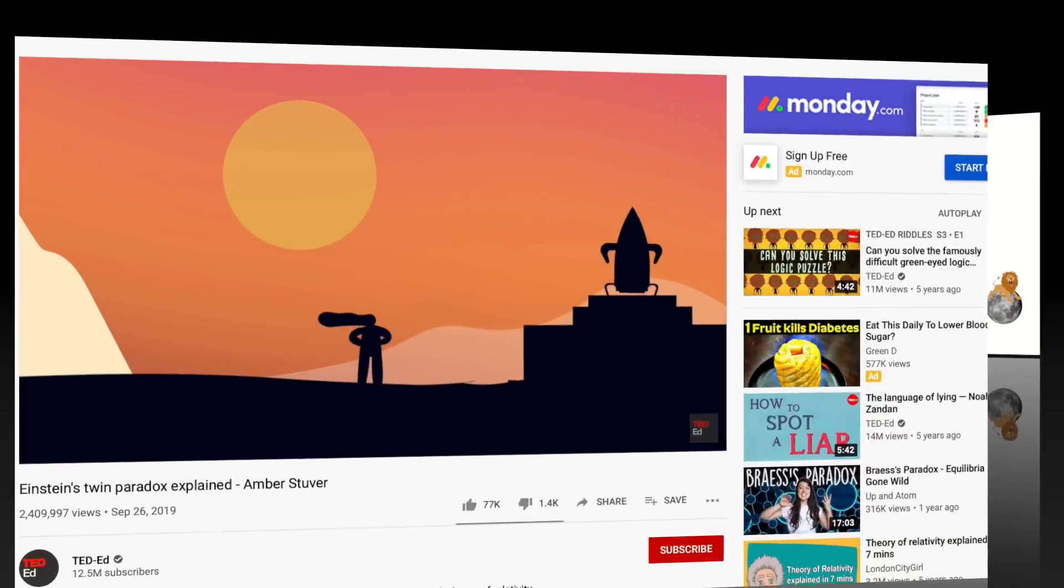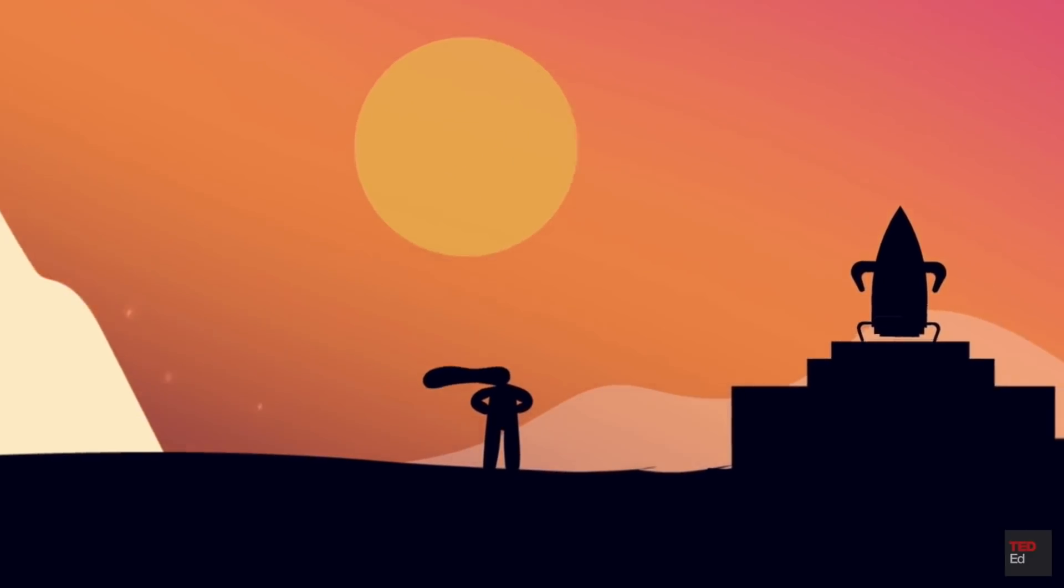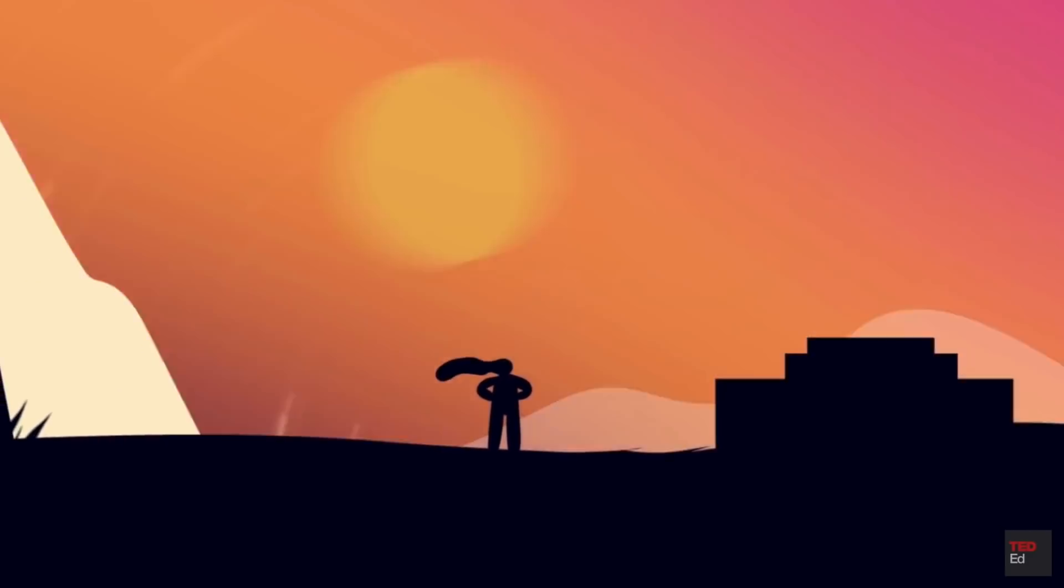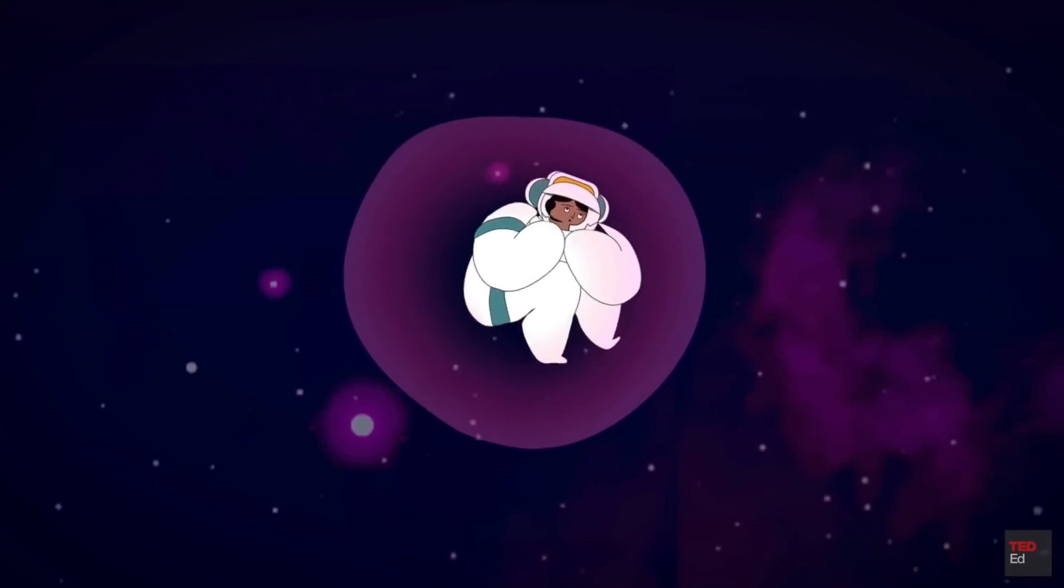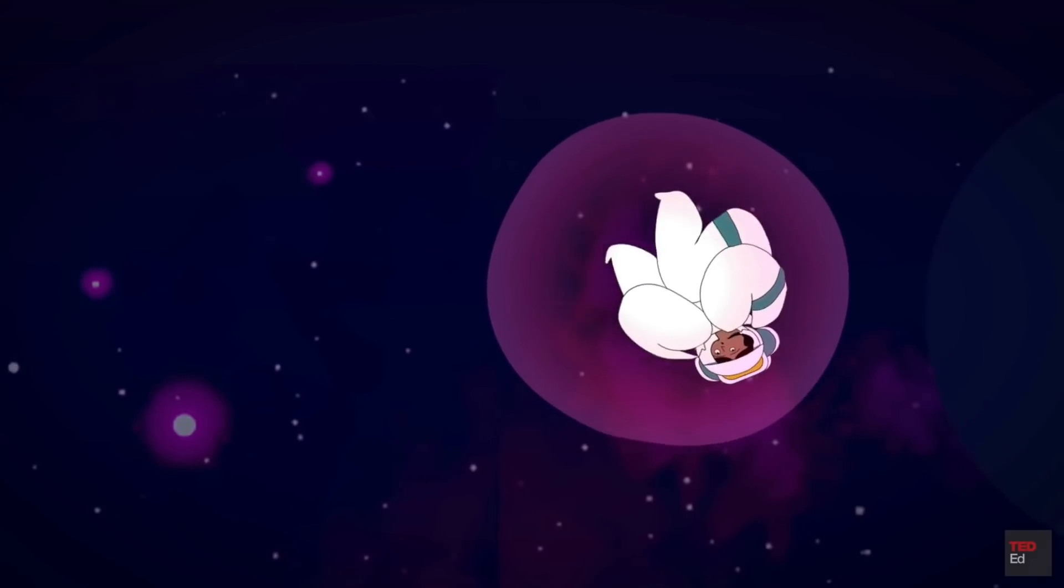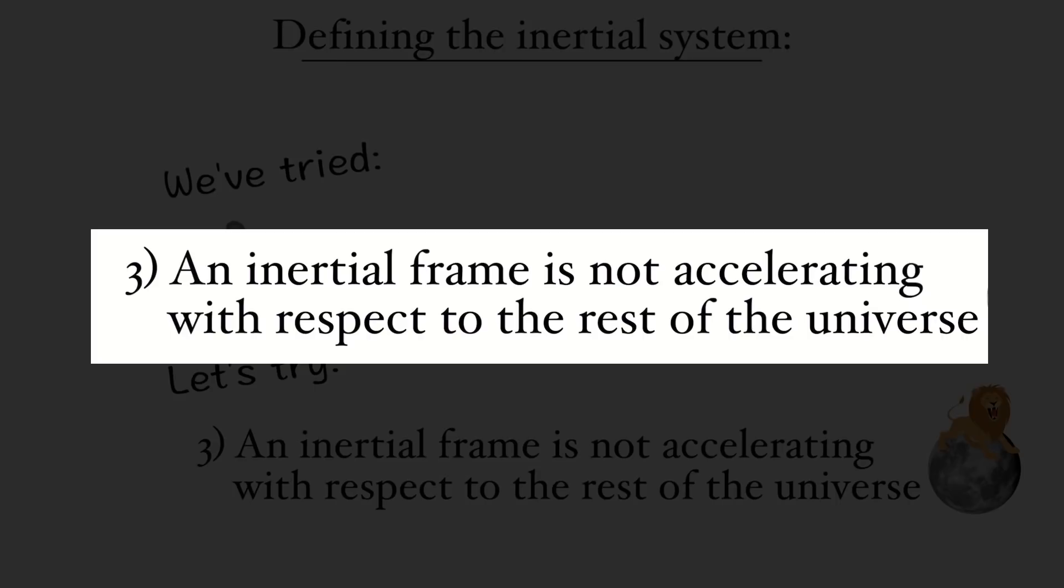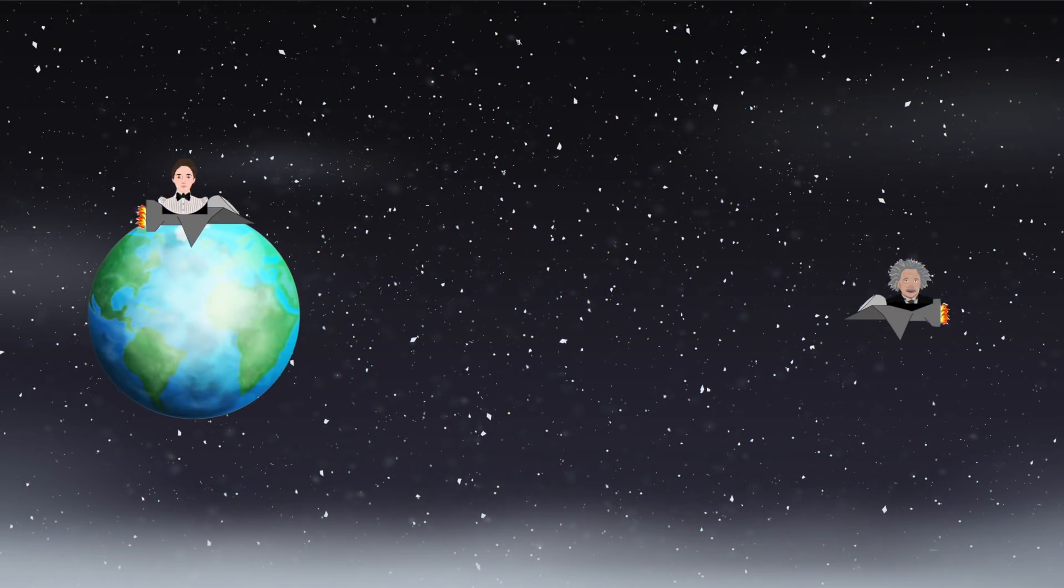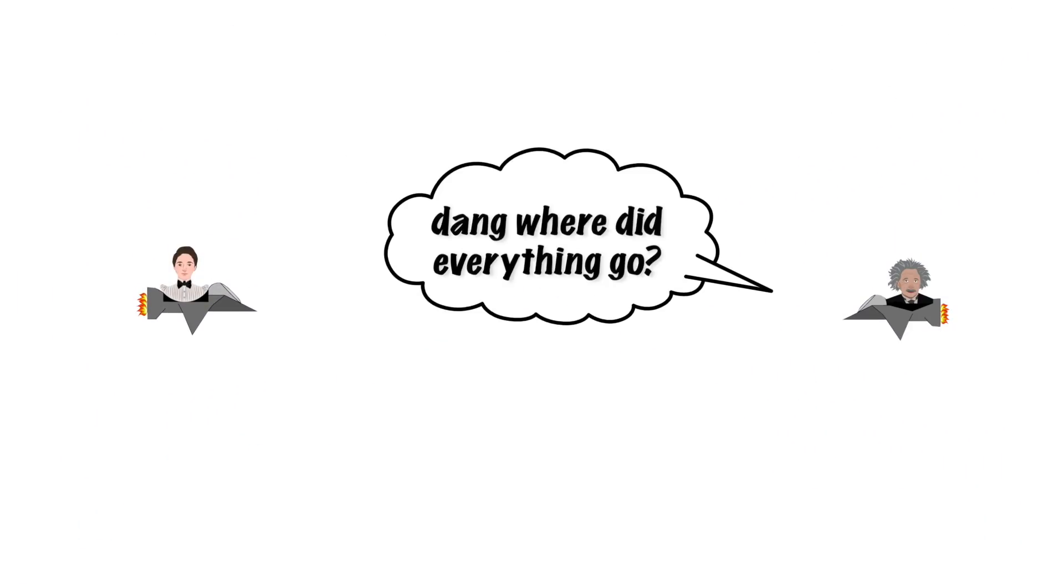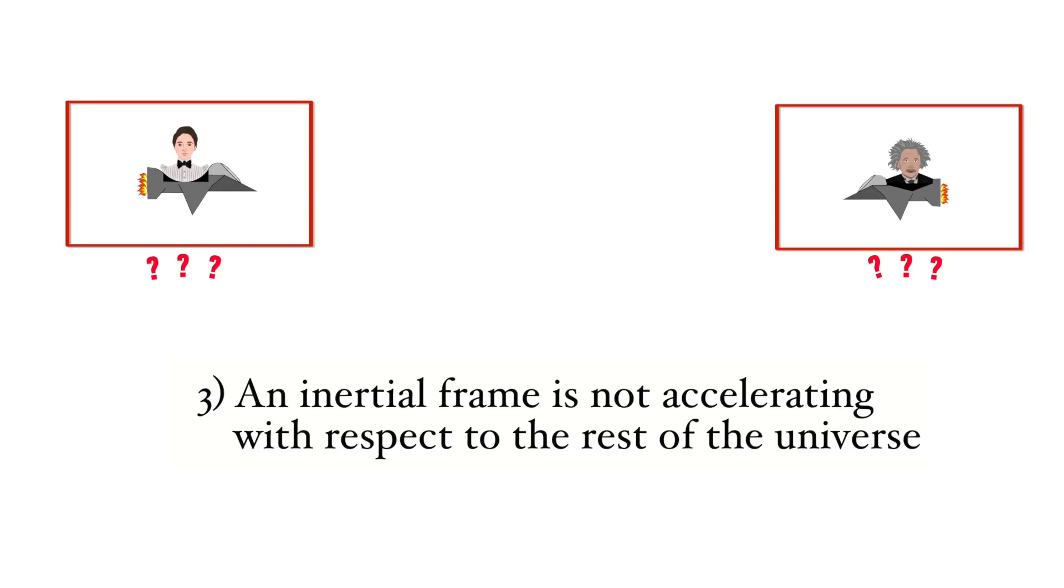This is, for instance, how this popular video on the twin paradox from the Ted Ed series defines the inertial frame. To be an inertial observer, one has to maintain a constant speed and direction relative to the rest of the universe. But there's still a problem with this definition, because if we formulate the twin paradox in empty space, then there will be no rest of the universe for the twins to refer to, and thus no way to determine which twins' frame is inertial. So we have to cross that definition off too.